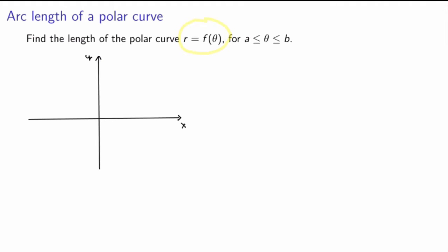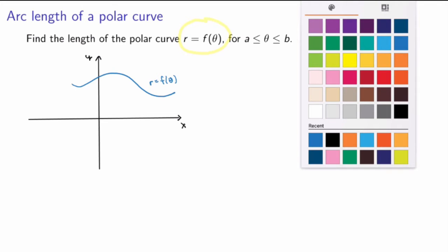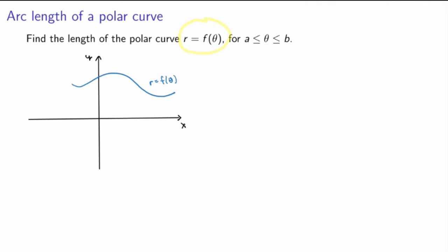Let's see what it looks like. We have a polar curve r equals f(theta), and we want to calculate the length of that curve between theta equals a and theta equals b. Remember that theta equals a corresponds to a ray that goes through the origin, and similarly theta equals b is another ray through the origin. So what we want to calculate is the arc length of the curve between these two values of theta.